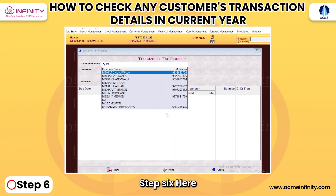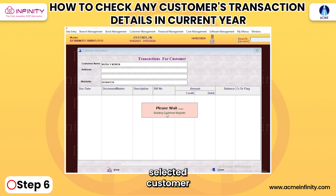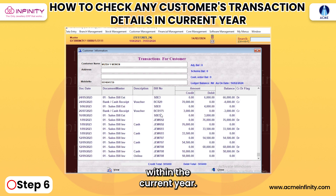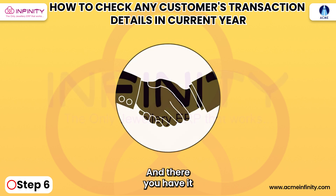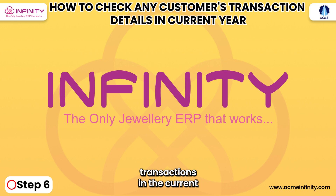Step 6: Here, you'll find all the transaction details for the selected customer within the current year. And there you have it — with Acme Infinity Jewelry ERP Software, tracking customer transactions in the current year is quick and convenient.